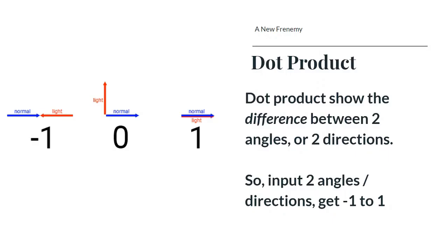In Unity, it's helpful to think of those as directions, not just angles, because they could be vectors. Think of it as two directions, and it gives you one result. The output is always from negative one to one. If it's negative one, they're pointing at each other — they're in opposition. If they're positive, they're going the same way. If they're zero, they don't care about each other — they'll never meet.